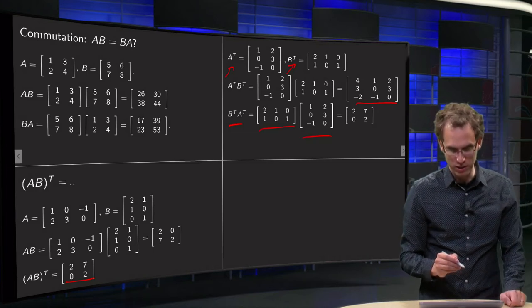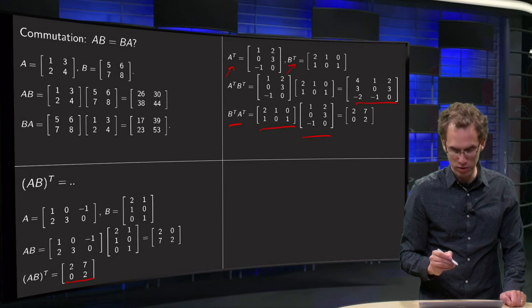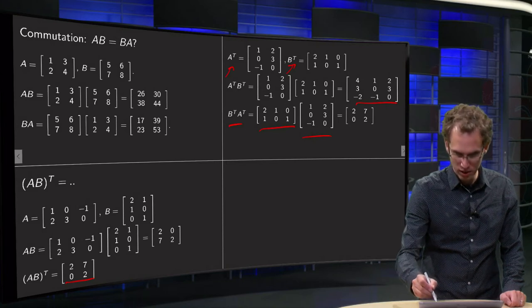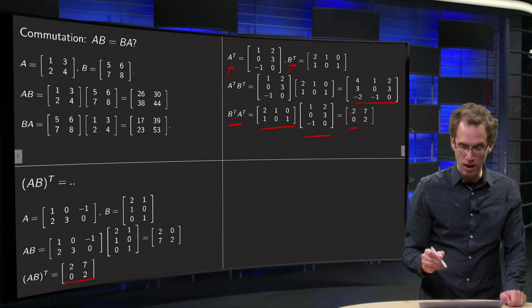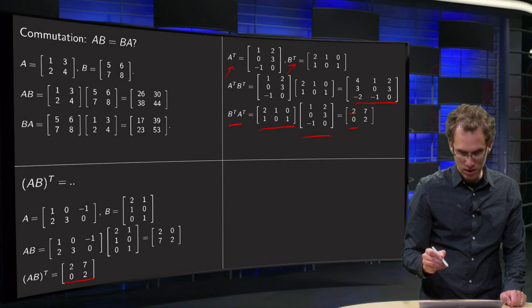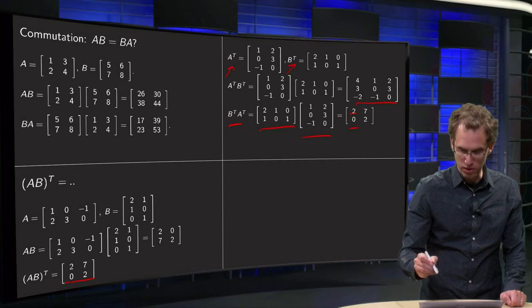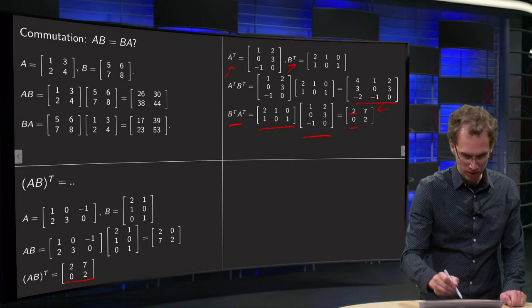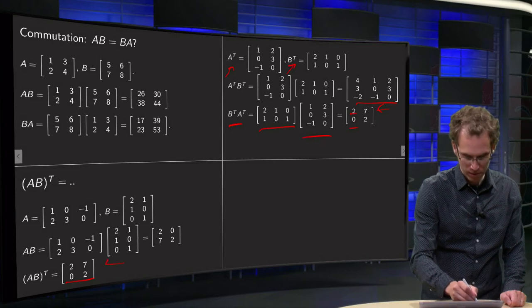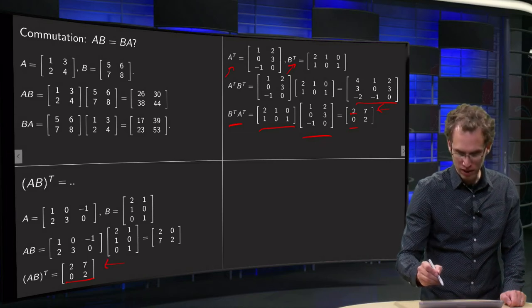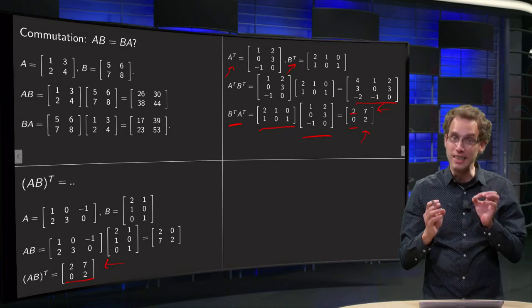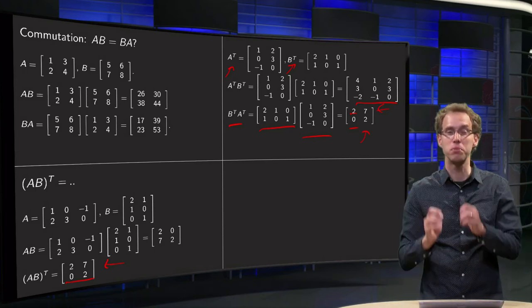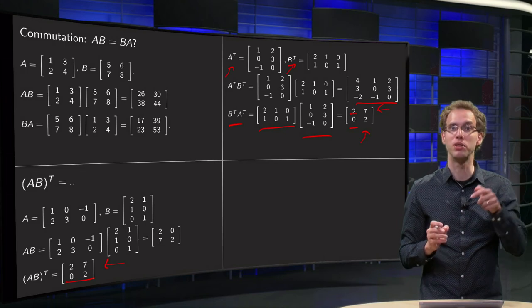Here we have our B transpose times A transpose. And then we get 2 plus 0 plus 0 equals 2, so that one is correct. And then we get 1 plus 0 plus 0 equals 0, so that's fine. Then we get 2 plus 3 plus 0 equals 7, which is again the same as we had over here. And then finally we get 2 plus 0 plus 0 equals 2. So we see in this case, AB transpose happens to be the same as B transpose times A transpose.